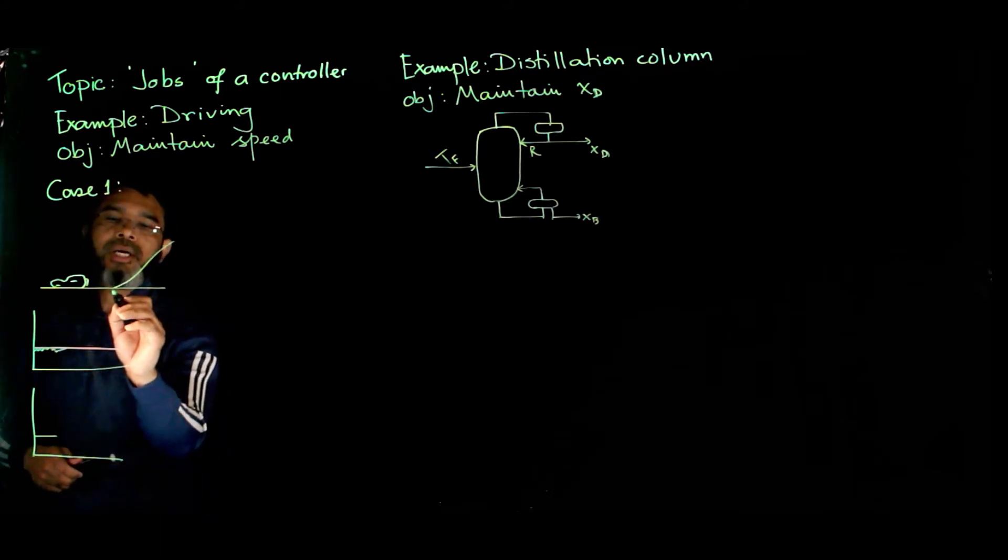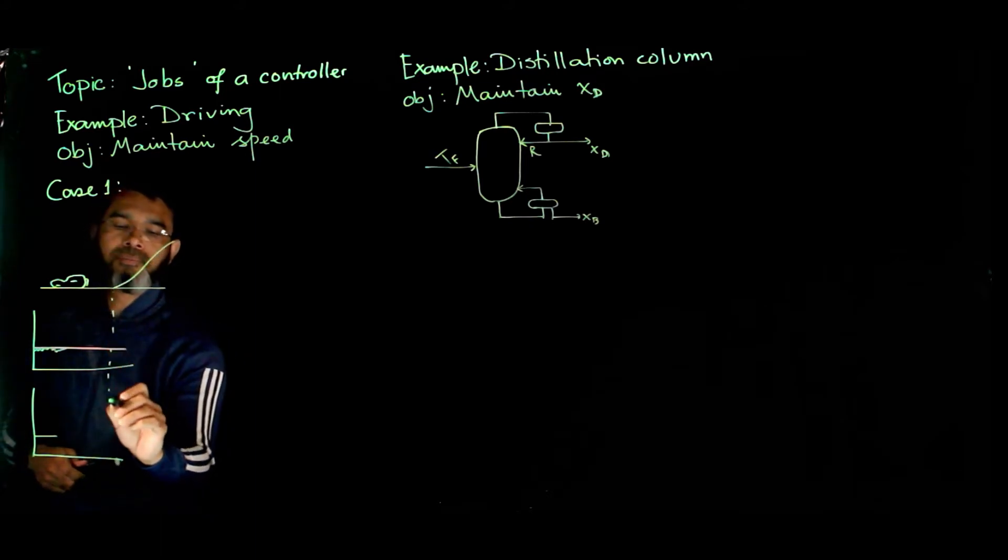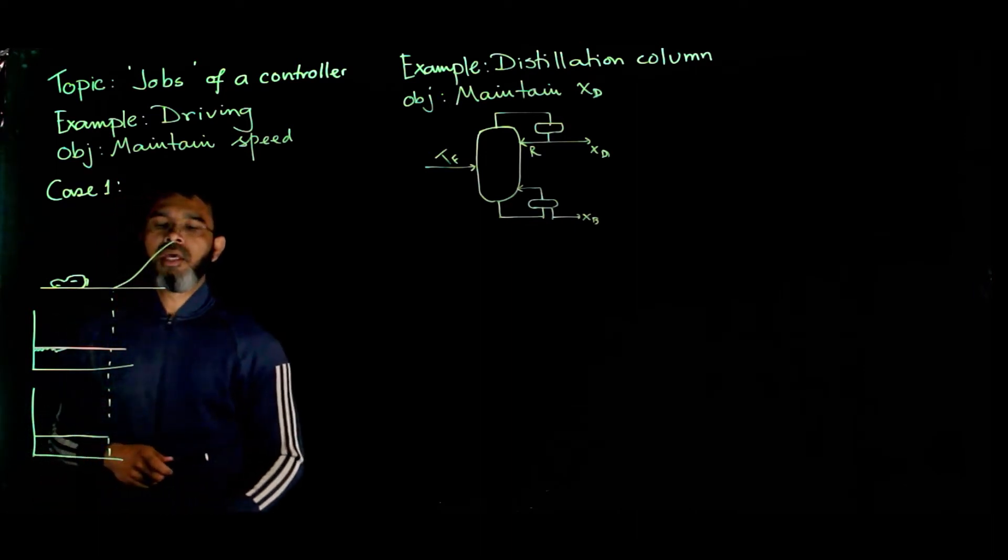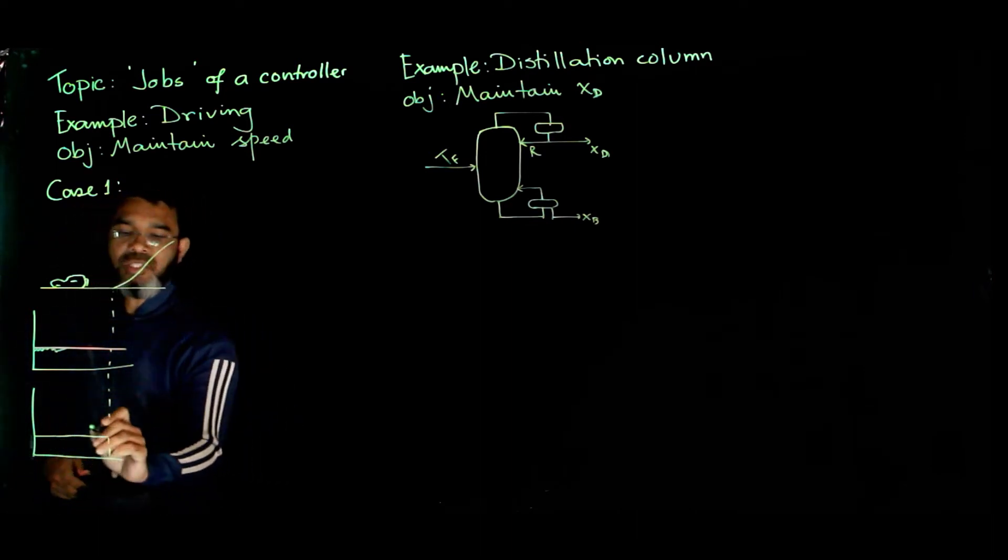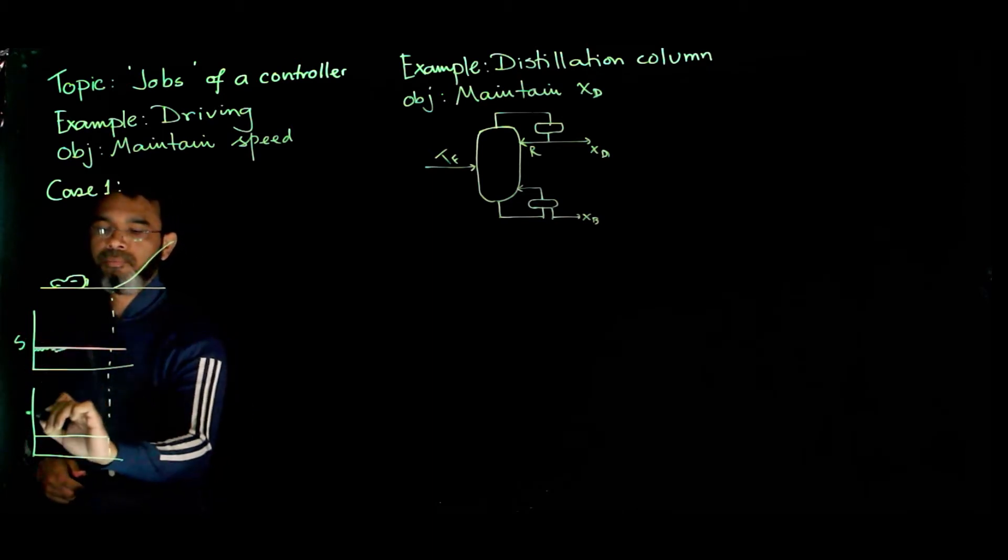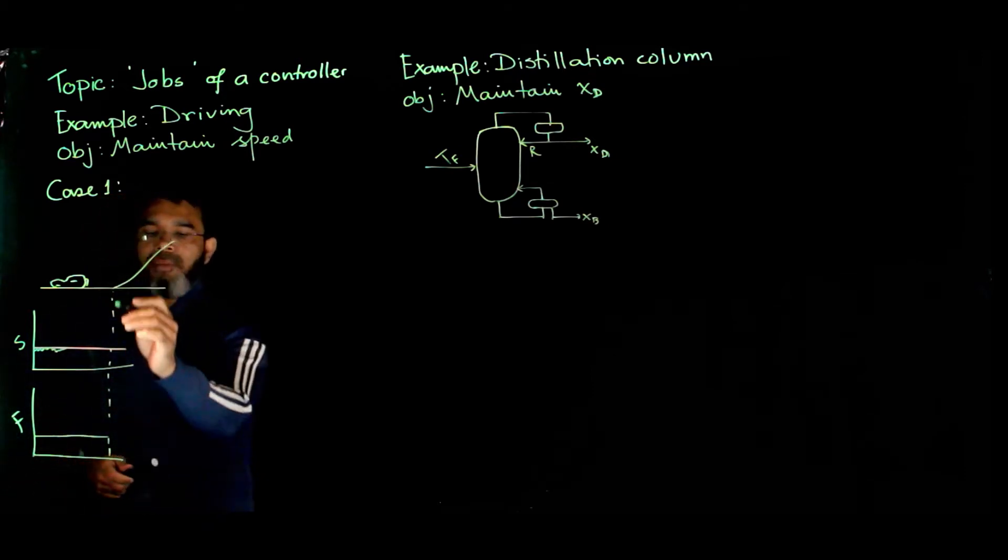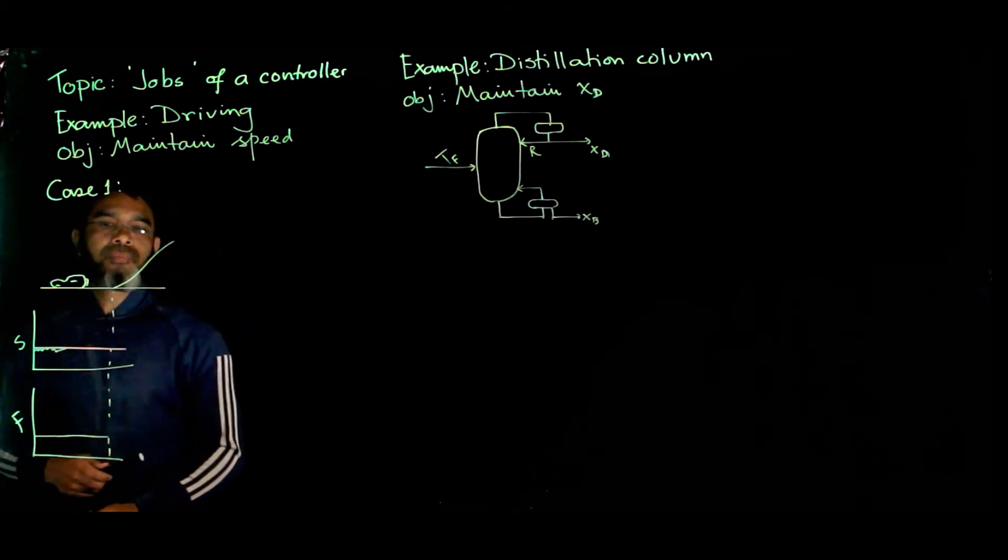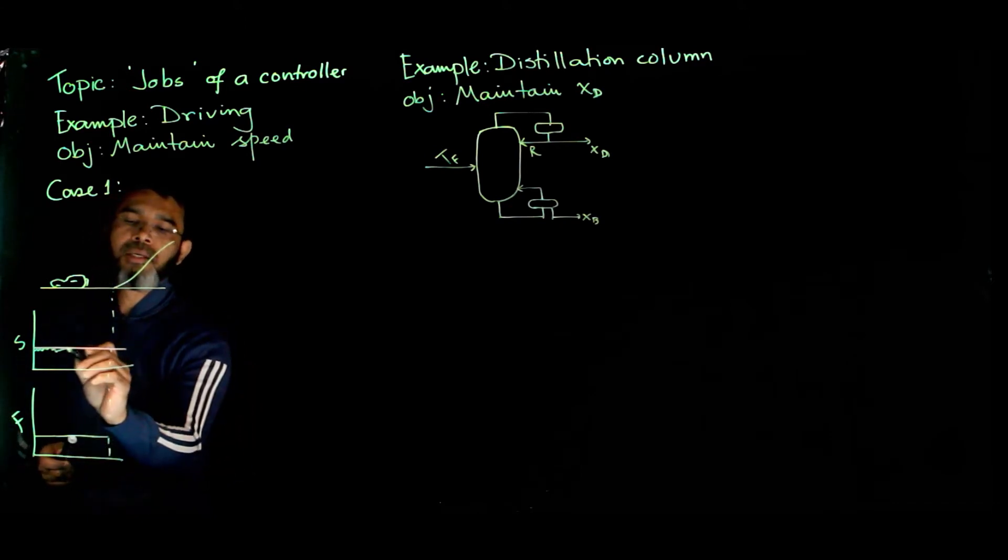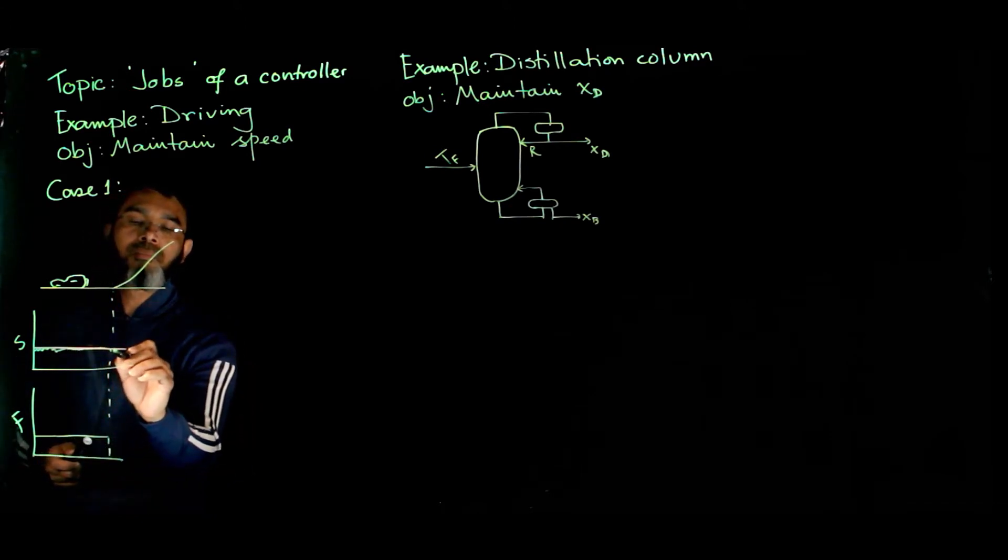When you're approaching the uphill, if you keep the gas flow to be the same - this is speed, this is fuel flow - if you keep the fuel flow to be the same while approaching the uphill, your speed may go down.